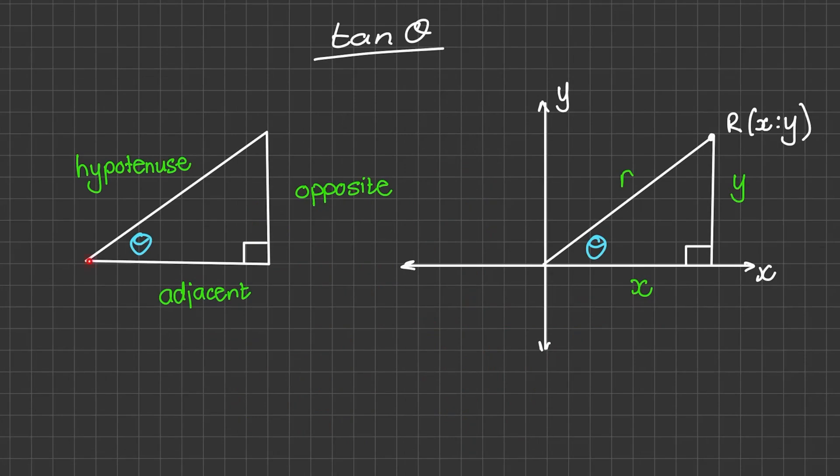First, let us discuss the ratio of tan theta in terms of a right-angled triangle. The definition of the ratio of the tangent of theta is the length of the opposite side divided by the length of the adjacent side. So it is opposite over adjacent.